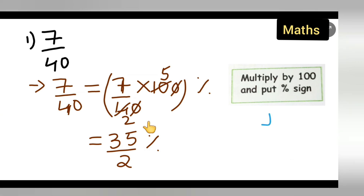Now we can divide this — 35 divide by 2. 2 ones are 2, carry 1, then 5. So next is 2 sevens are 14, and you are left with 1.